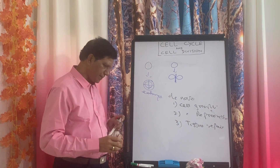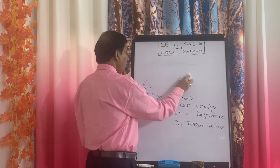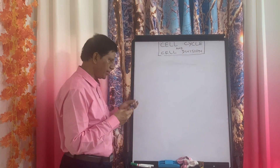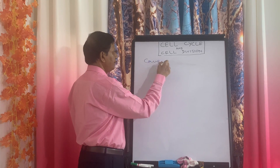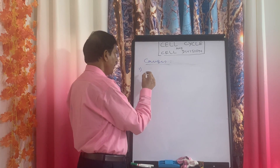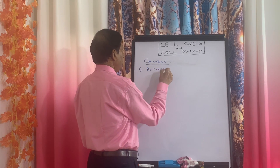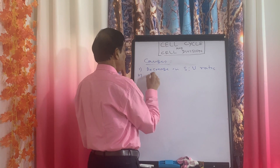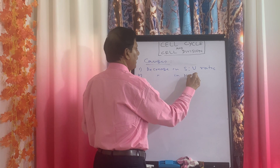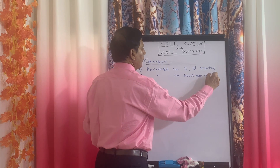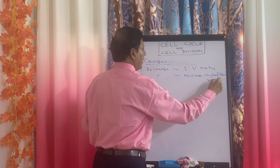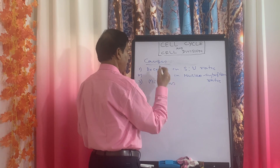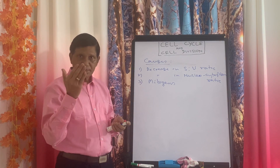So these are the important characteristics of cell division — it is a must for all these things. Now the next question: what are the causes of cell division? What influences cell division? Number one: decrease in surface-to-volume ratio. Number two: decrease in nucleocytoplasmic ratio.